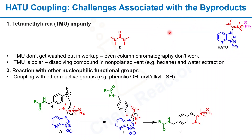The first challenge is the tetramethylurea (TMU) impurity. This TMU impurity is a polar impurity that doesn't get washed out in the workup, and even if you run repetitive column chromatography — more than two or three times — it's not that easy to remove.